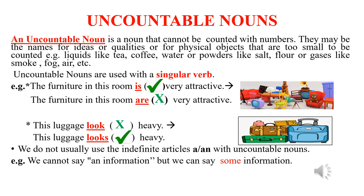Now, uncountable nouns. An uncountable noun is a noun that cannot be counted with numbers. They may be the names for ideas or qualities or for physical objects that are too small to be counted. For example, liquids like tea, coffee, water, or powders like salt, flour, or gases like smoke, fog, air — these are uncountable nouns. Uncountable nouns are used with the singular verb. For example: the furniture in this room is very attractive — that is correct, not 'are very attractive'.